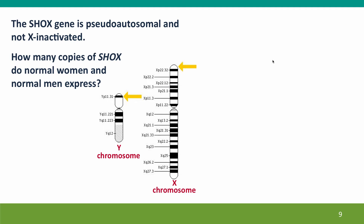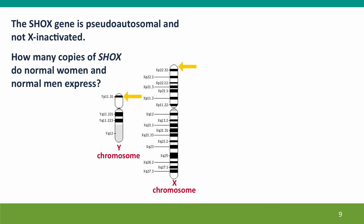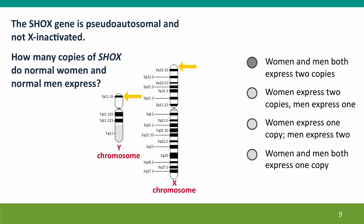The question is: how many copies of SHOX do normal women and normal men express? The answer is they express two copies. In normal men, there's a copy on the Y chromosome and a copy on the X chromosome, and they're both expressed. In normal women, there are two X chromosomes, and because the pseudoautosomal region is not X-inactivated, both copies are expressed.